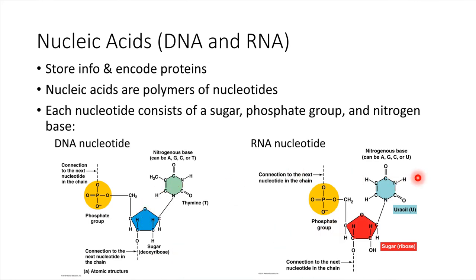In terms of the nitrogen base, RNA has a special base called uracil, represented with U. So RNA has uracil instead of thymine. But otherwise, the bases are the same—A, G, and C show up in both DNA and RNA.